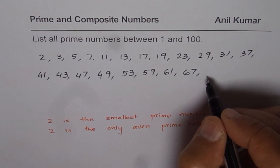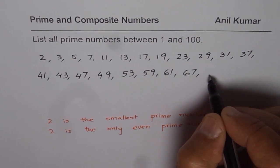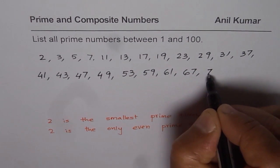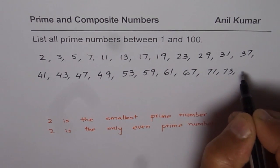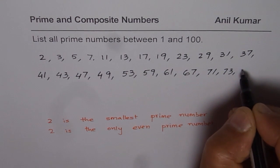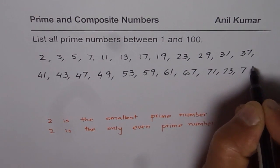And then we have 68, 69 - 69 is divided by 3. 70 is even. 71, let me write down 71 here. 72, 73, let me write down 73. 74, 75, 76, 77 goes by 11. 78, 79, let me write down 79.